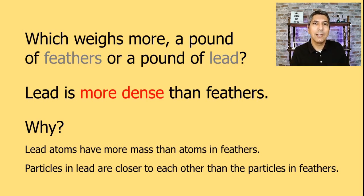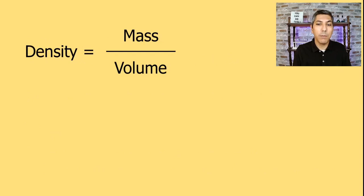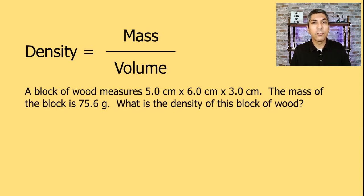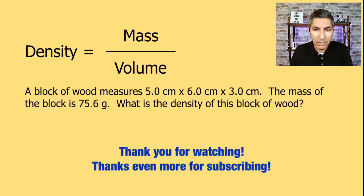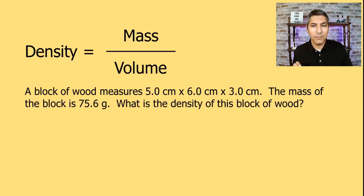As we calculate density in the laboratory, the actual equation is: density equals mass of an object divided by its volume. Now let's try a problem. Here we have a block of wood that measures 5.0 centimeters by 6.0 centimeters by 3.0 centimeters. The mass of the block is 75.6 grams. What is the density of this block of wood?